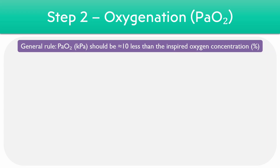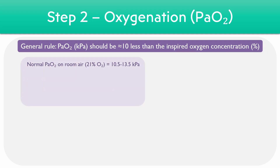The second step involves looking at the partial pressure of oxygen, or the PaO2, on the blood gas result. As a general rule, this should be roughly 10 less than the inspired oxygen concentration. On room air, which is roughly 20% oxygen, we would expect the partial pressure to be roughly 21 minus 10, so around 11, or between 10.5 to 13.5 kilopascals. If a patient has a 40% inspired Venturi mask, we would expect the PaO2 to be 40 minus 10, so roughly 30 kilopascals.